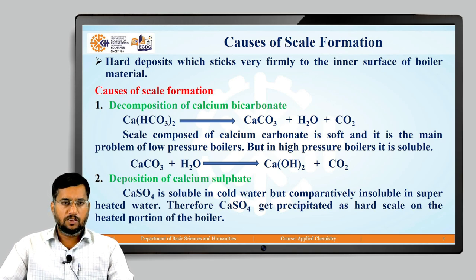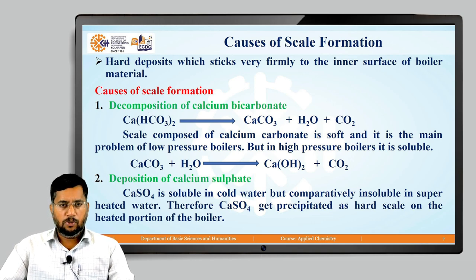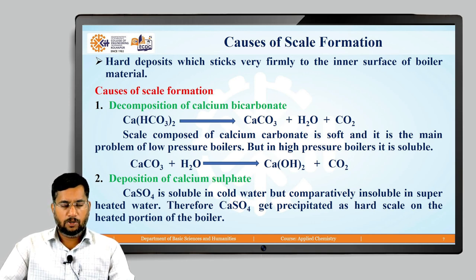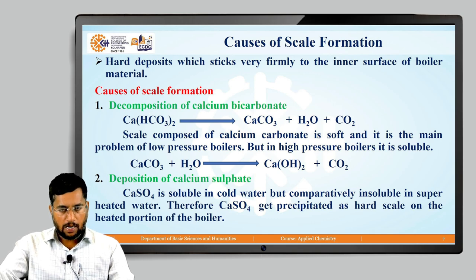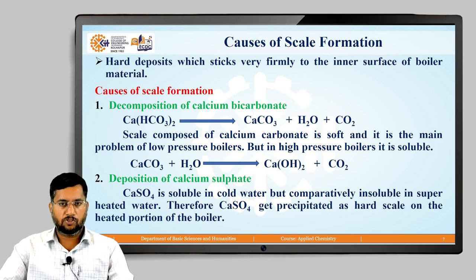The second cause is deposition of calcium sulfate. Calcium sulfate is soluble in cold water but comparatively insoluble in superheated water. Therefore, if boiler feed water contains even a small amount of calcium sulfate, it precipitates as a hard scale on the heated portions of the boiler, forming a hard adherent bond with the inner wall.